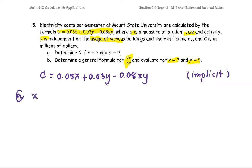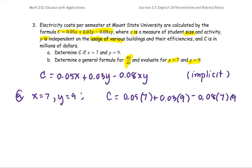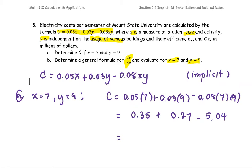In part A, for X equals 7 and Y equals 9, we compute the cost by replacing 7 for X and 9 for Y. We get 7 times 0.05 which is 0.35, plus 0.03 times 9 which is 0.27, minus 0.08 multiplied by 7 and by 9 which is 5.04. Simplifying 0.35 plus 0.27 minus 5.04, we get negative 4.42.